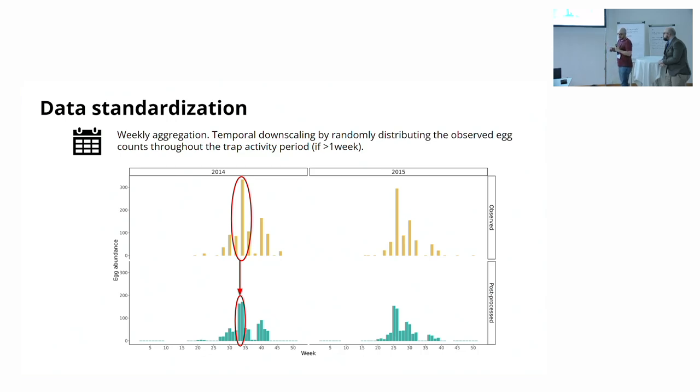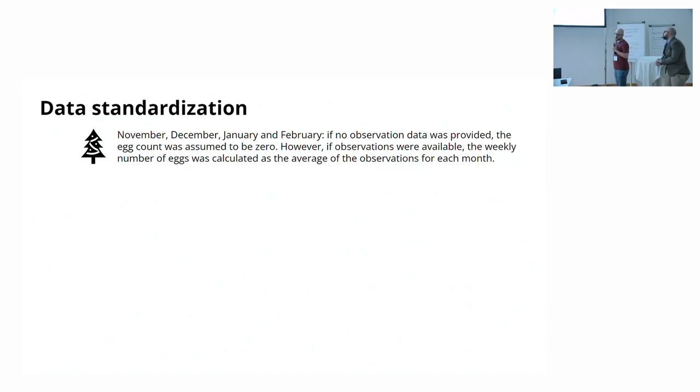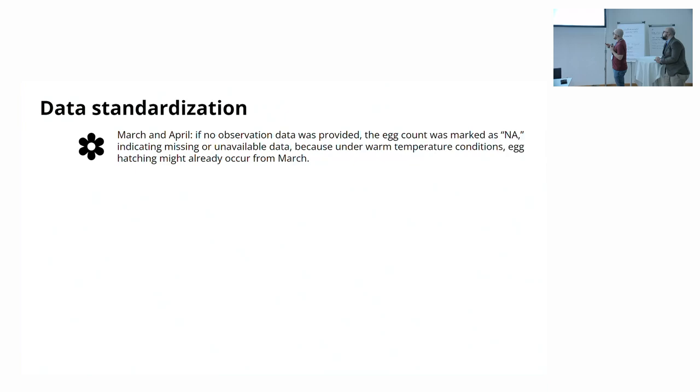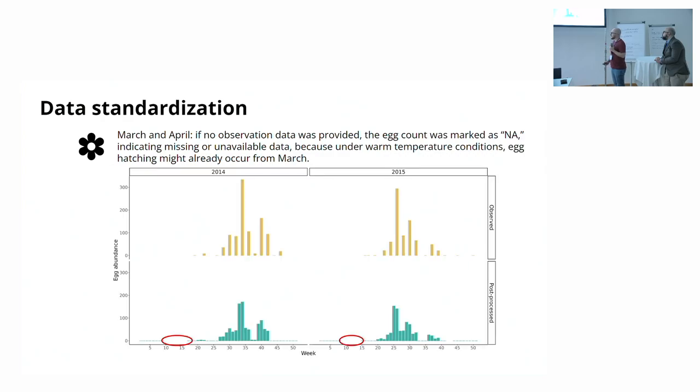The nice thing of this approach, which is stochastic in a sense, is that you keep the seasonal distribution of your observations. The other thing is that often you don't sample in November, December, January, February, because usually you don't have mosquitoes. Here, when we had observations, we put the observations. When we didn't have the observations, we said that safely November, December, January, and February, we don't have mosquitoes. So we imposed zero in this case. When we don't have observations or we might have the species such as March and April, we left an NA if no observations were available, as you can see in this case.